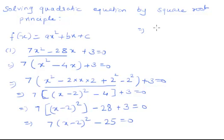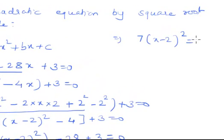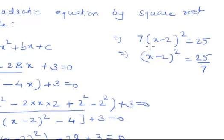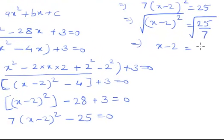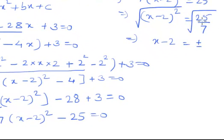This implies 7(x - 2)² - 28 + 3, which is -25, equals 0. So 7(x - 2)² = 25. Dividing both sides by 7, the 7 cancels, giving (x - 2)² = 25/7. Taking the square root of both sides, x - 2 equals plus or minus 5 over √7, since √25 = 5 and √7 remains.